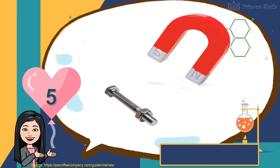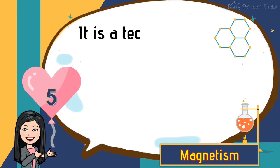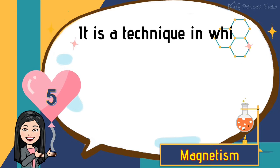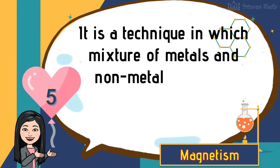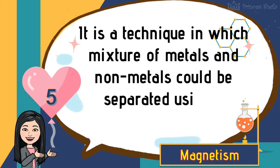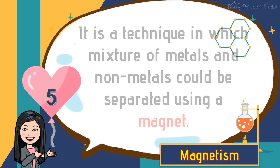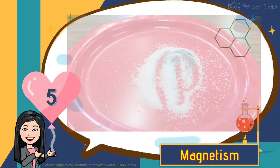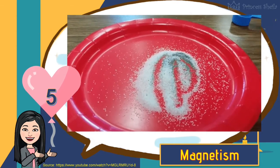Fifth is magnetism. It is a technique in which a mixture of metals and non-metals could be separated using a magnet, like the mixture of iron and salt. The magnet attracts the iron.